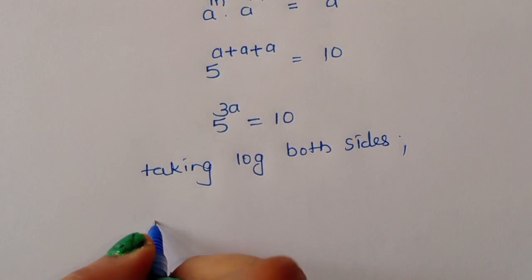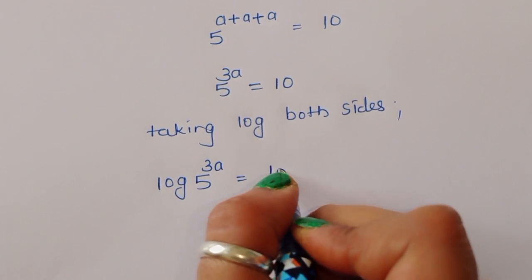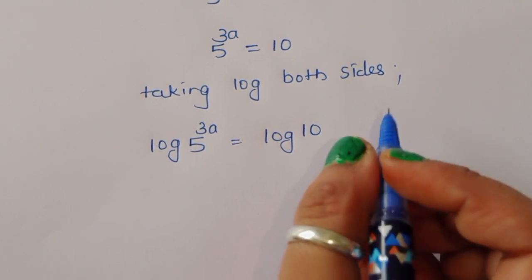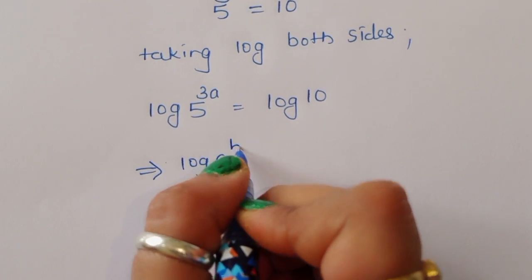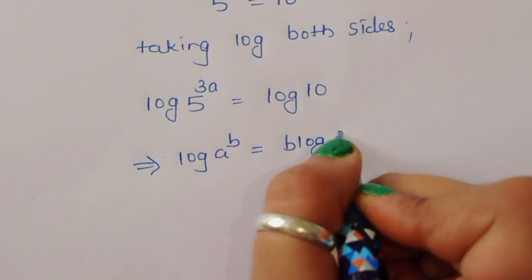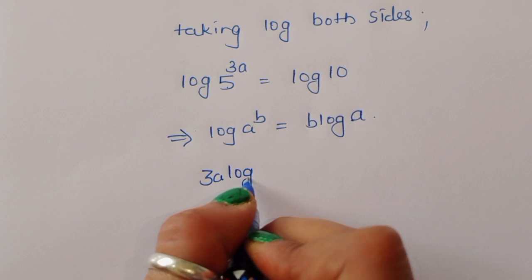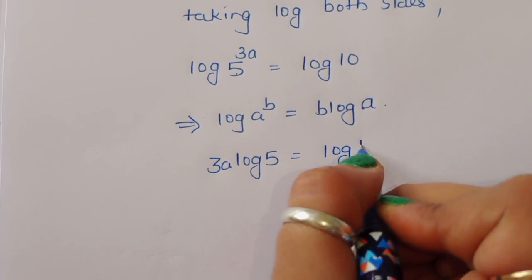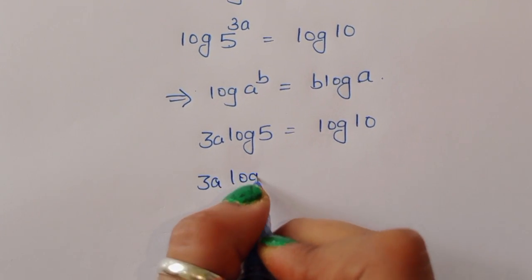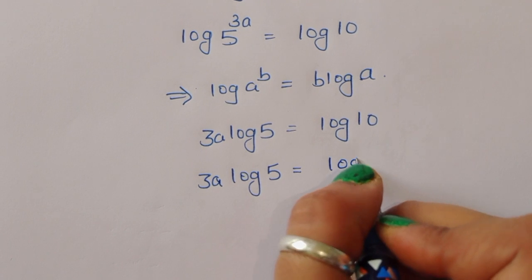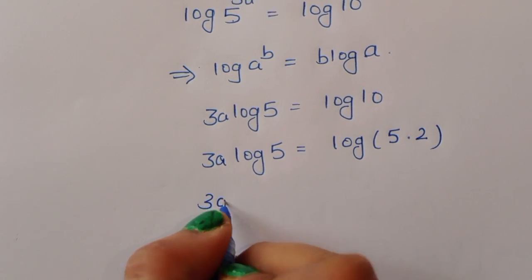So 5^(3a) is equal to 10. Now taking log on both sides, we get: log of 5^(3a) is equal to log of 10. We know the formula log(a^b) equals b·log(a), so applying this formula here.